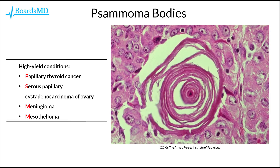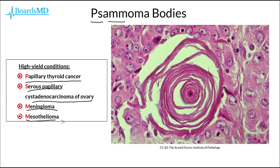Psammoma bodies are another characteristic histopathologic feature seen in papillary carcinoma of the thyroid, and this can be appreciated in this classic histopathologic image on the right-hand side, where we essentially have these concentric loops. Psammoma bodies can be found in several high-yield conditions remembered by the mnemonic PSMM, as these letters appear quite literally in the word psammoma bodies. These conditions include papillary carcinoma of the thyroid, serous papillary cystadenocarcinoma of the ovary, meningioma, and mesothelioma.